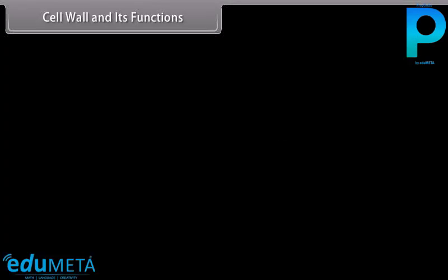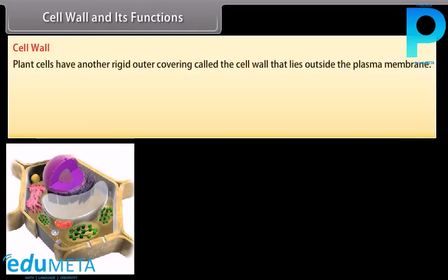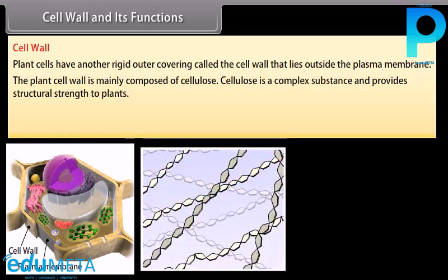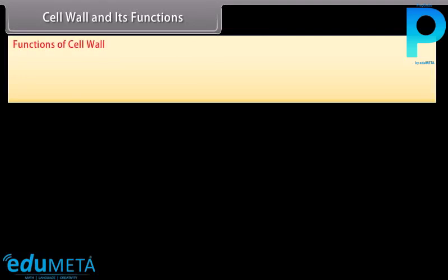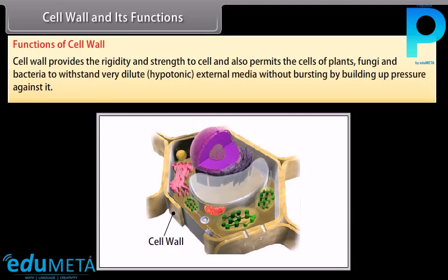Cell wall and its functions: Plant cells have another rigid outer covering called the cell wall that lies outside the plasma membrane. The plant cell wall is mainly composed of cellulose, a complex substance that provides structural strength to plants. When a living plant cell loses water through osmosis, there is shrinkage or contraction of the contents of the cell away from the cell wall — a phenomenon known as plasmolysis. The cell wall provides rigidity and strength to the cell and also permits the cells of plants, fungi, and bacteria to withstand very dilute hypotonic external media without bursting, by building up pressure against it.